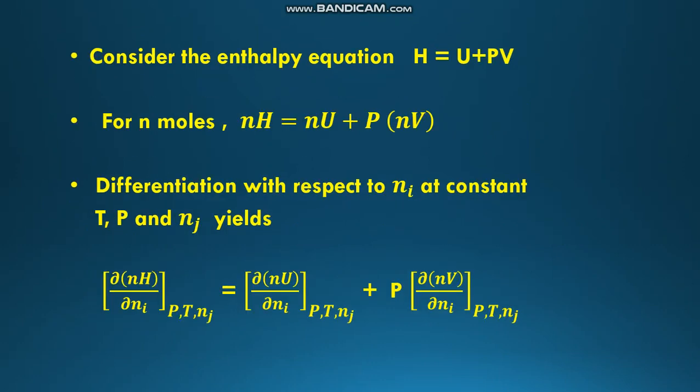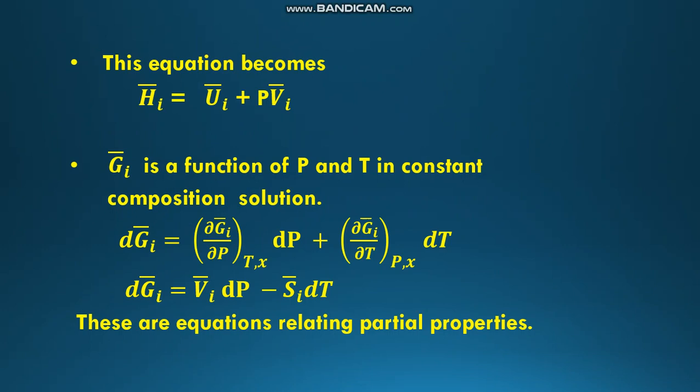Consider the enthalpy equation H = U + PV — this is a linear relation. We can write this for n moles as nH = nU + P(nV). Differentiating with respect to n_i at constant T, P, and n_j gives (∂(nH)/∂n_i) = (∂(nU)/∂n_i) + P·(∂(nV)/∂n_i). This equation becomes H_i bar = U_i bar + P·V_i bar.